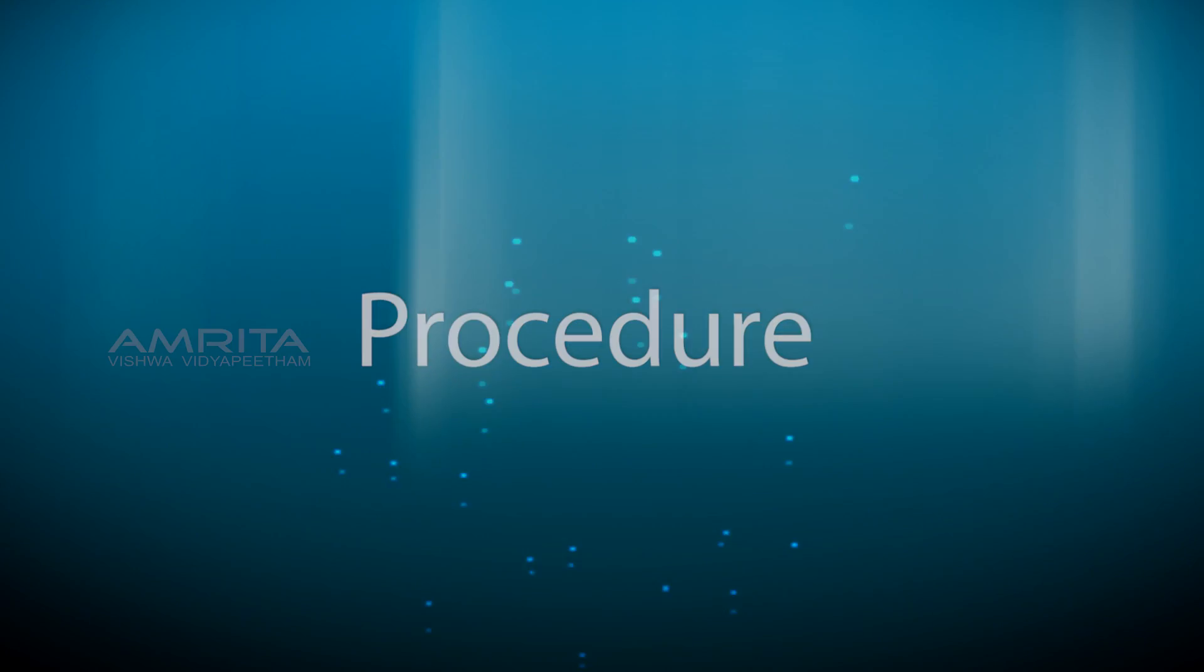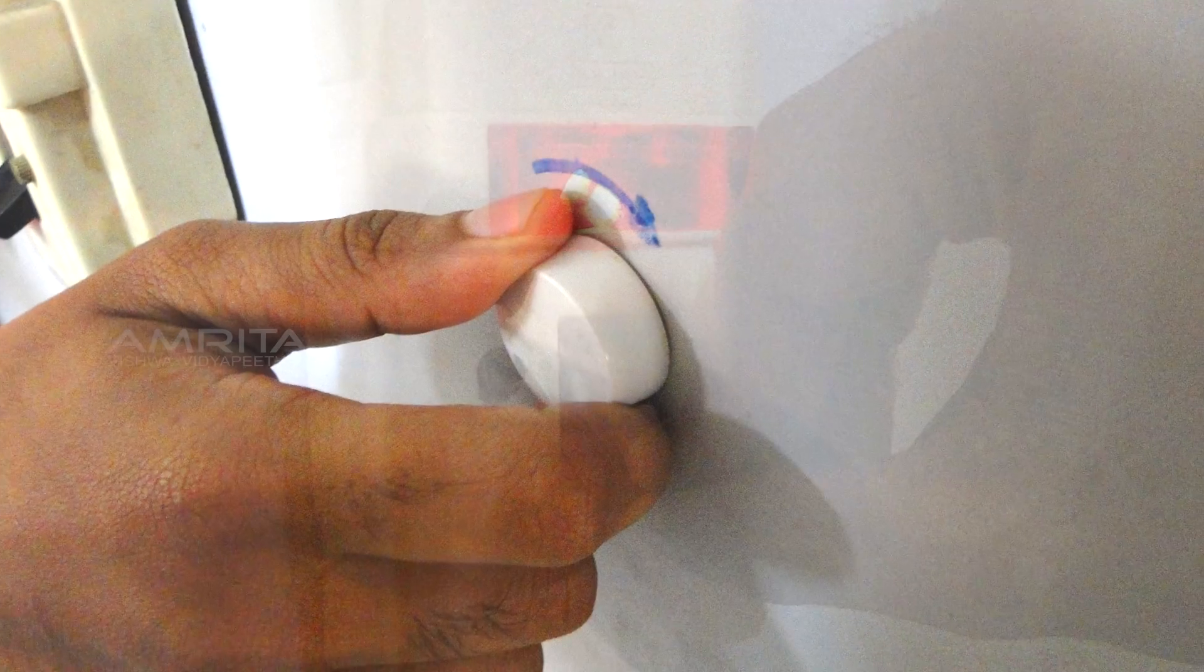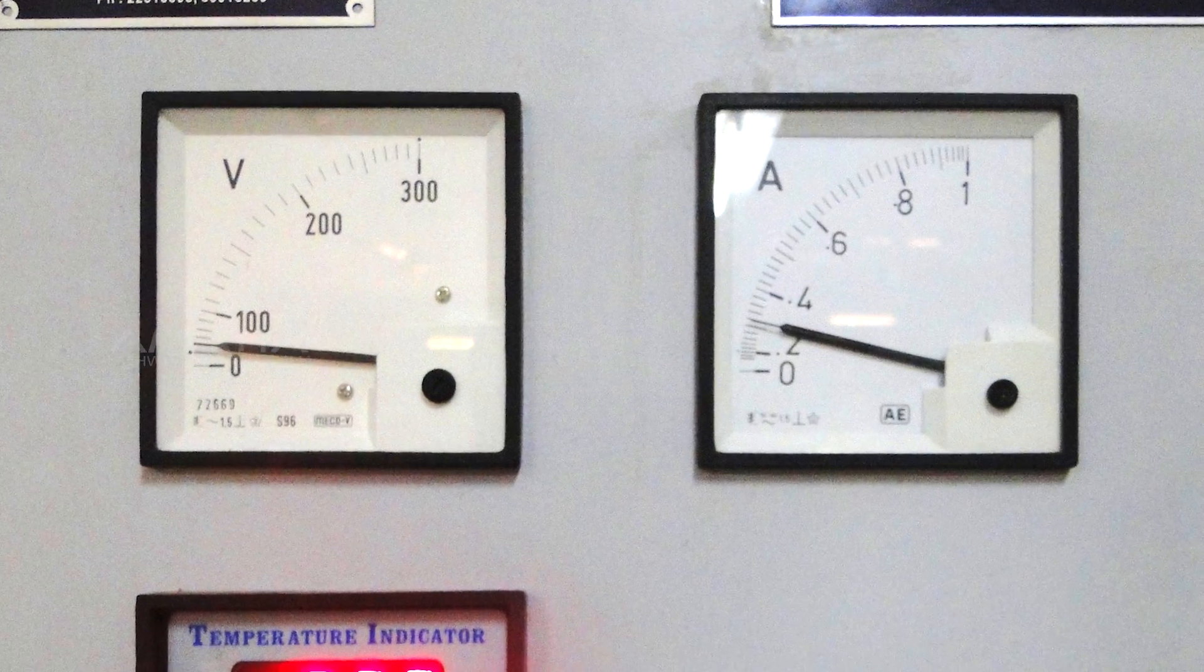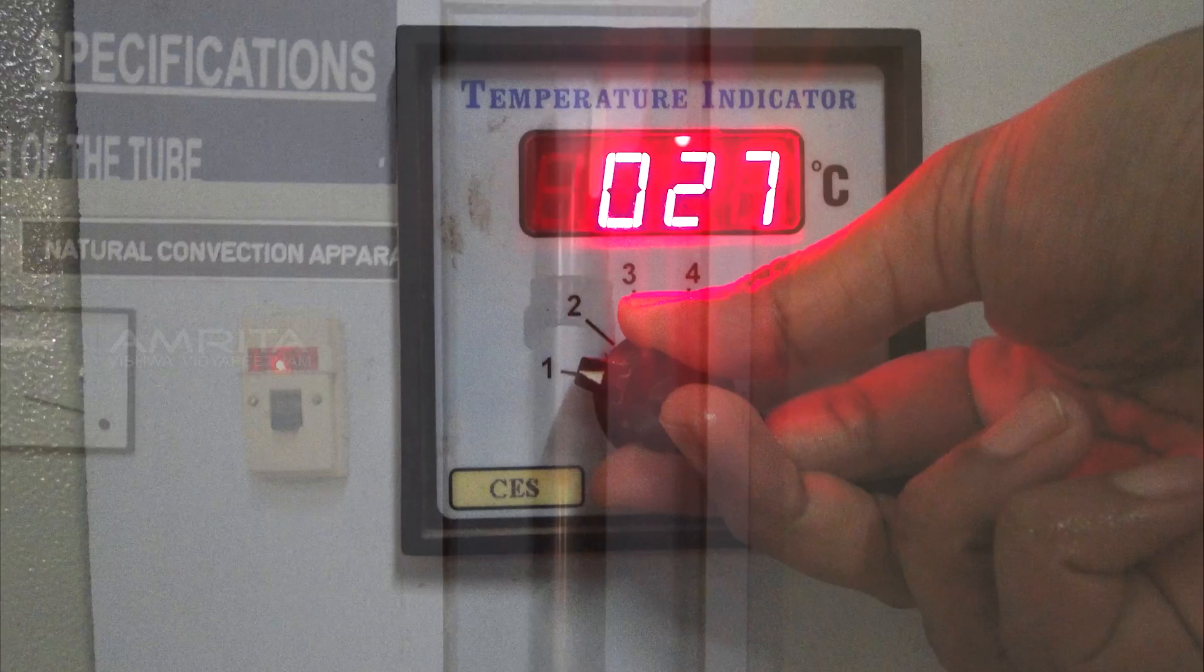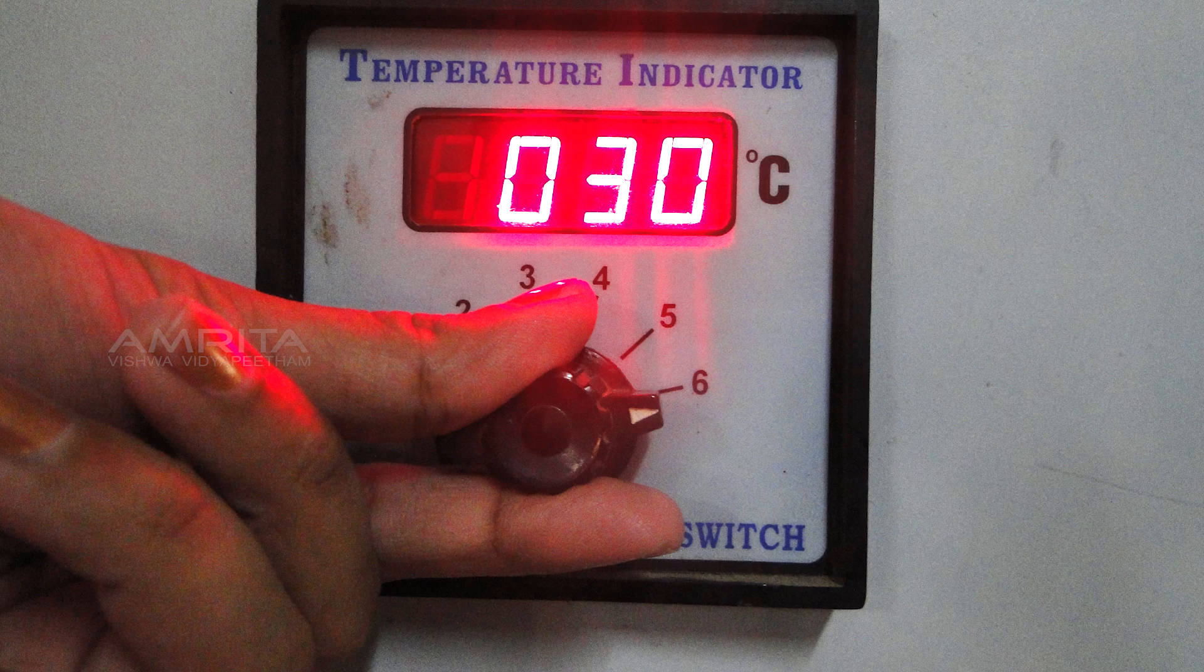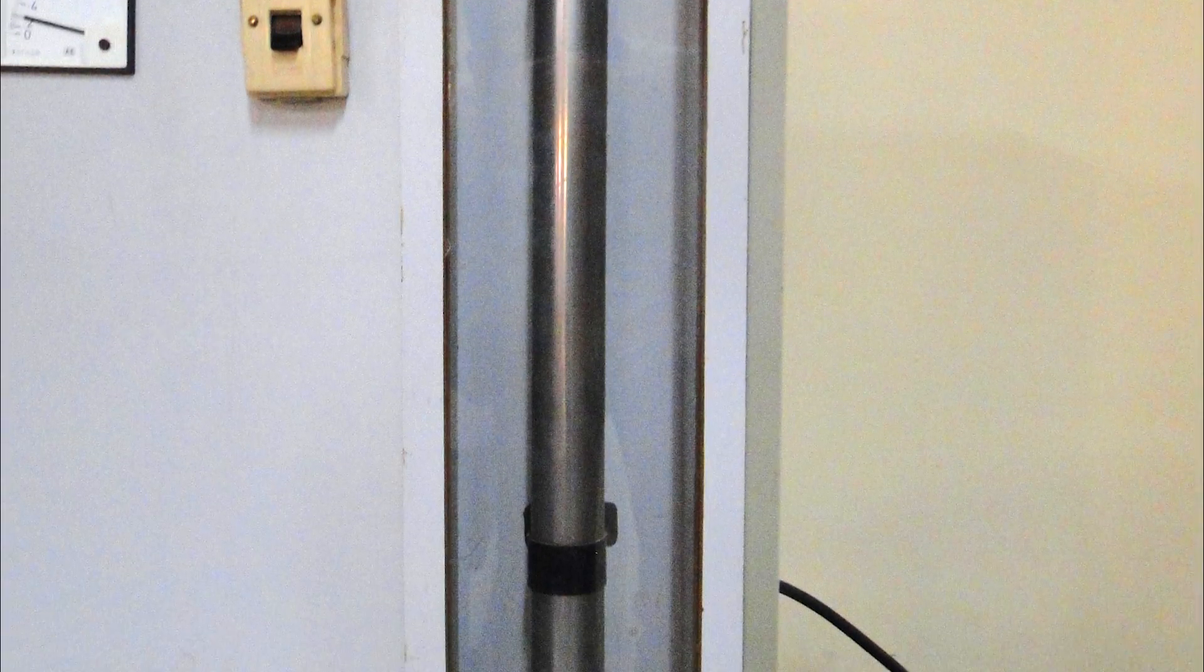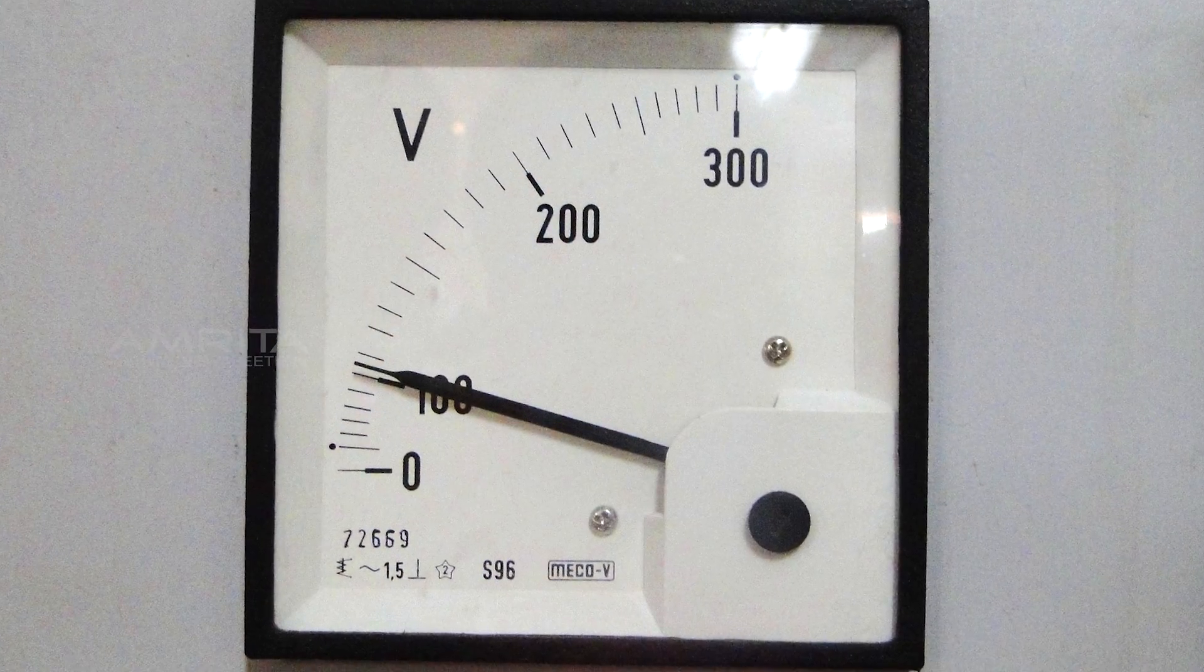Procedure: Power on the switch. Using the white knob on the apparatus we can fix the voltage and the corresponding current. When the steady state is reached, the temperatures T1, T2, T3, T4, T5, and T6 of the thermocouples on the surface of the given vertical cylinder are noted. The experiment is repeated for different values of voltage and the corresponding current.